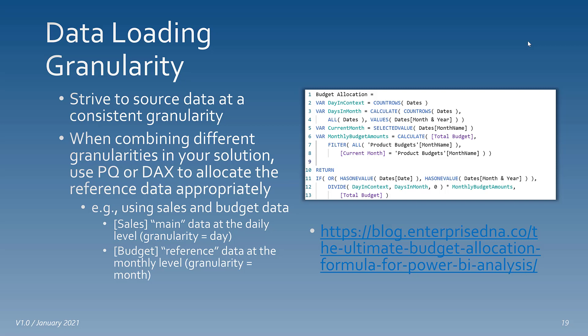The next topic is granularity. Strive to source your data at a consistent granularity. When combining different granularities in your solution, you'll need to use Power Query or DAX to allocate the reference data appropriately. For example, if your main sales data is at the daily level and your budget reference data is at the monthly level, you'll need to reconcile those. There is an example of a budget allocation DAX formula on the Enterprise DNA website — the link will be in the description below.